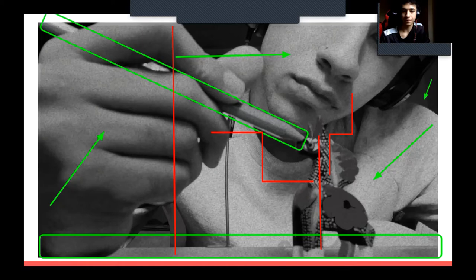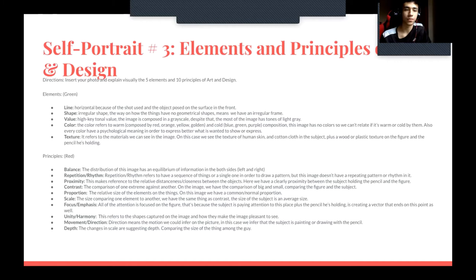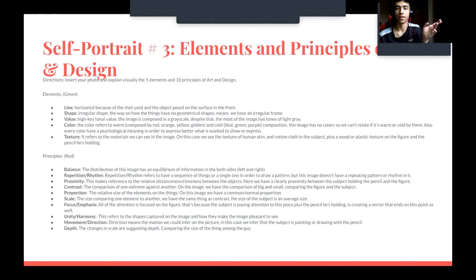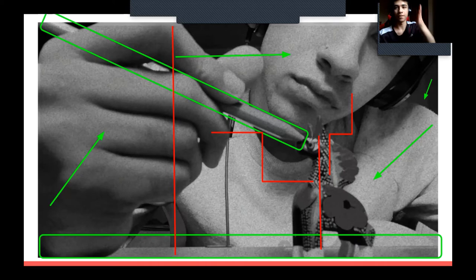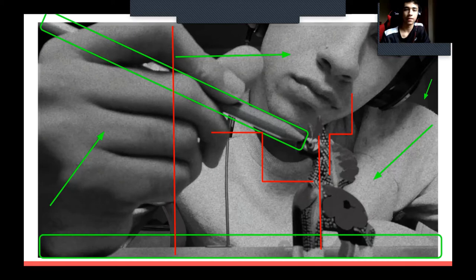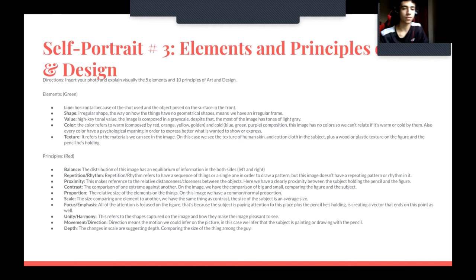Now for the principles. The first is balance — the distribution of this image has equilibrium of information on both sides. We could cut it in half and have a lot of information on both the left and right sides. The second is repetition or rhythm — it refers to a sequence of things forming a pattern, but this image doesn't have a repetition pattern or rhythm.